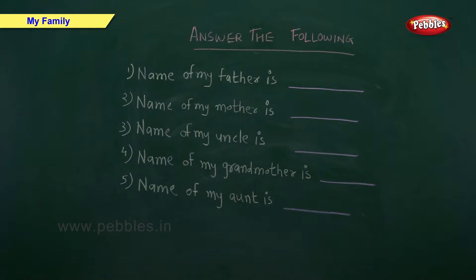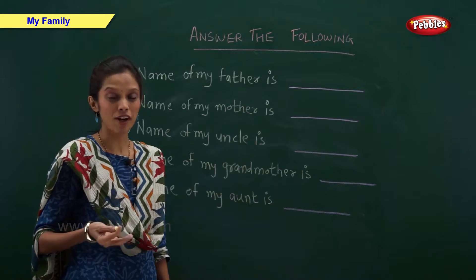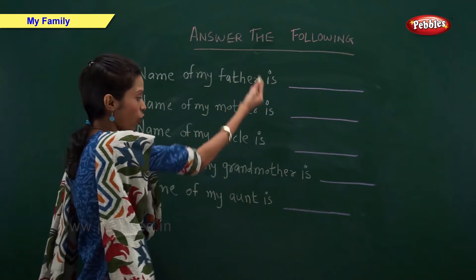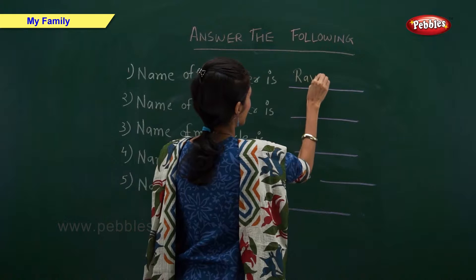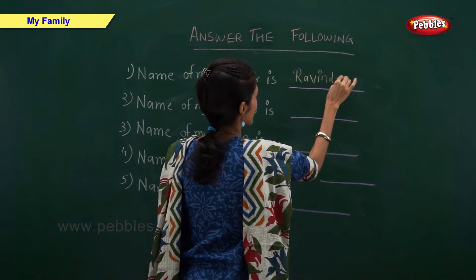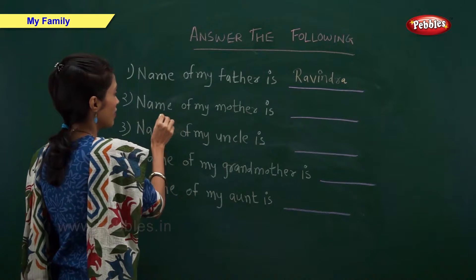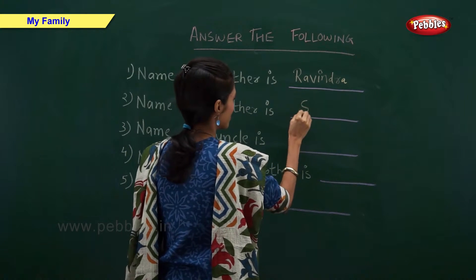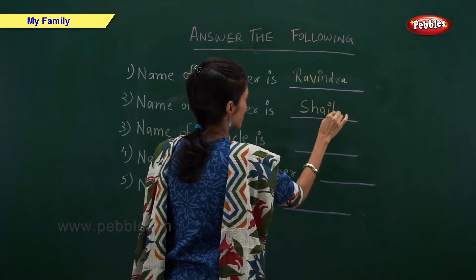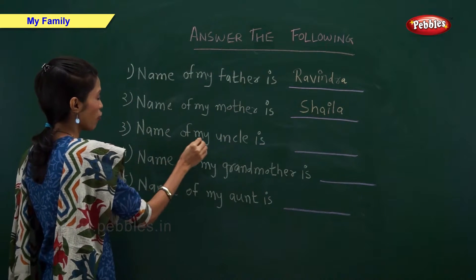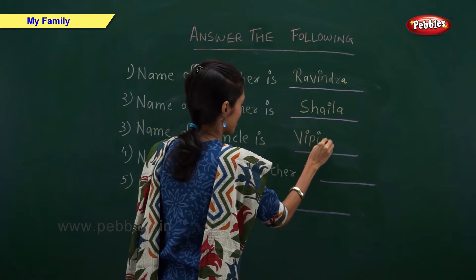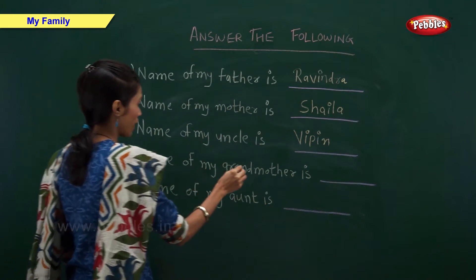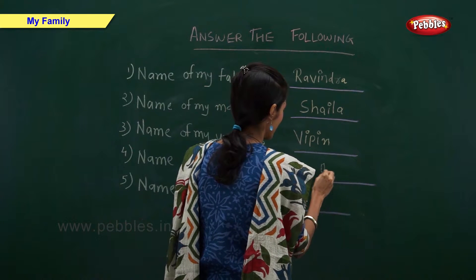You have to fill your family's details. Now, friends, I am going to fill in details of my family. Name of my father is Ravindra. Name of my mother is Shaila. Name of my uncle is Vipin. Name of my grandmother is Anuradha.